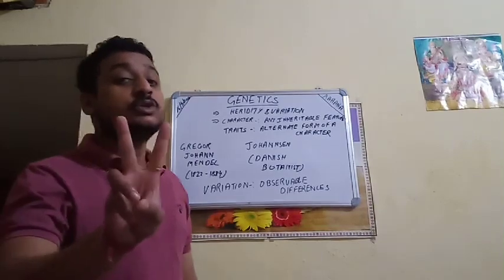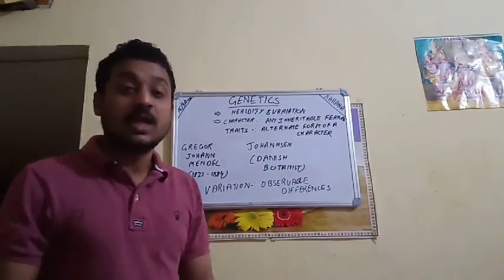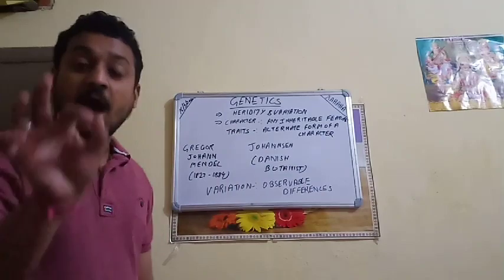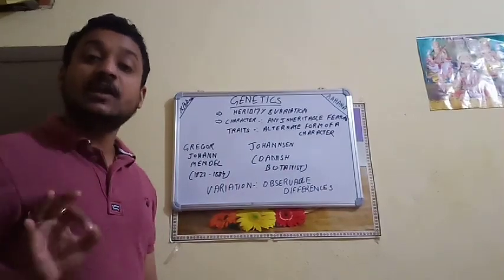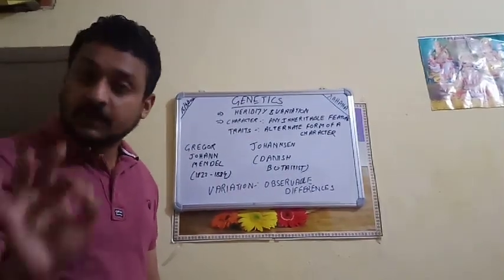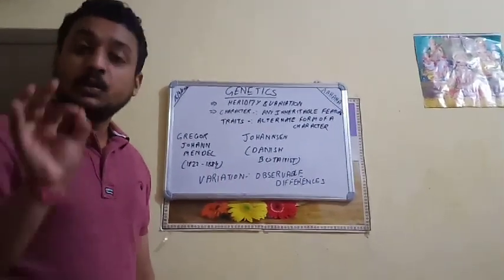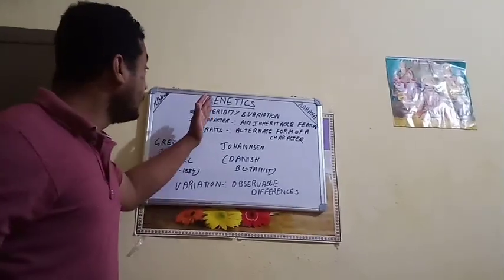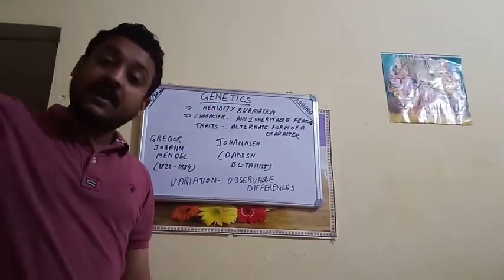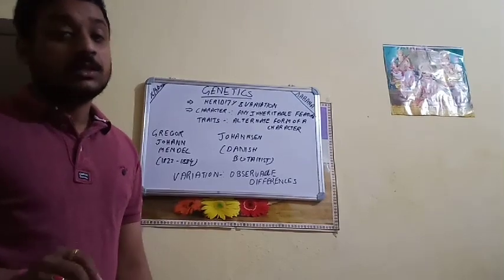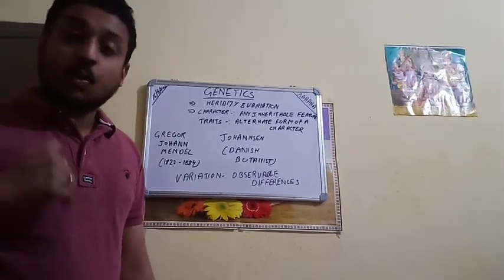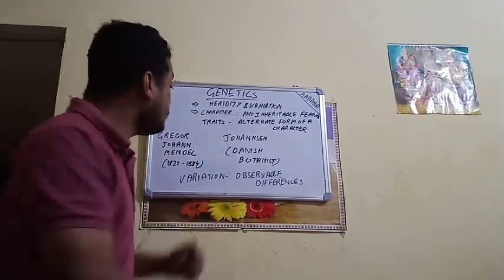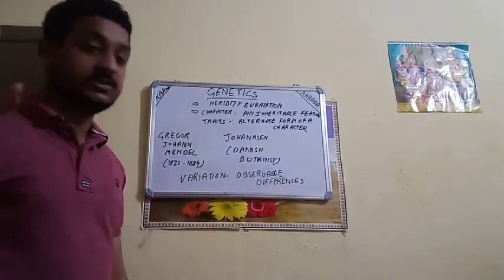Genetics is based on two things: heredity and variation. Heredity we understood — it is how things pass from parents to offspring, from one generation to the other. Variation means any observable differences. I will cover each topic in detail; this is just an introduction for now.